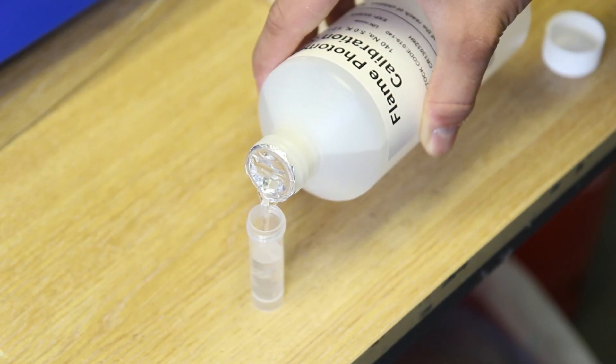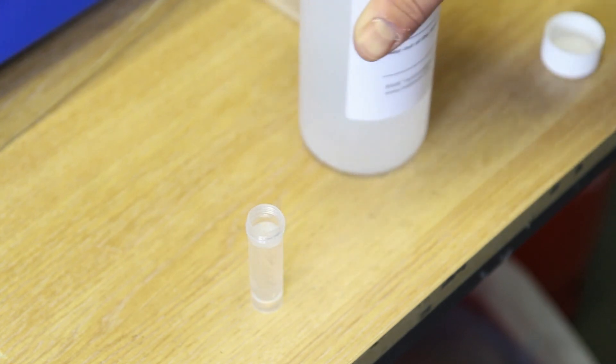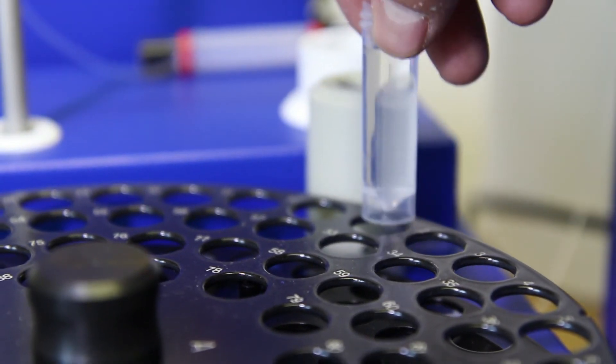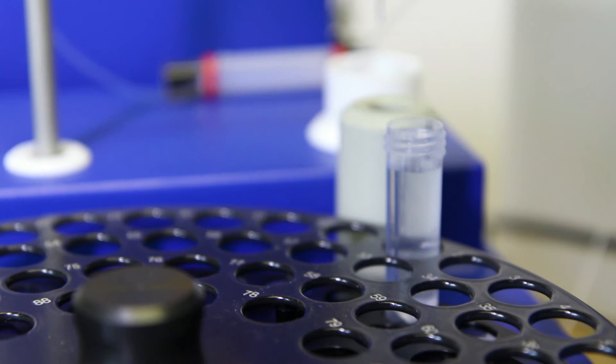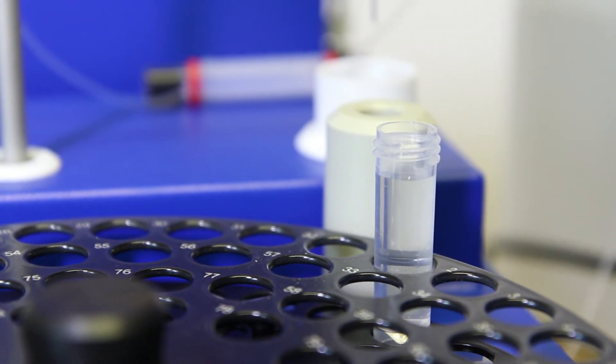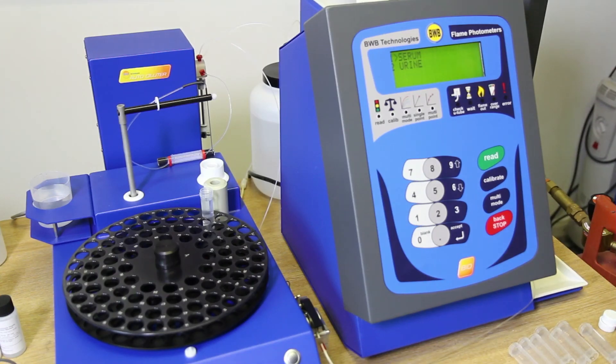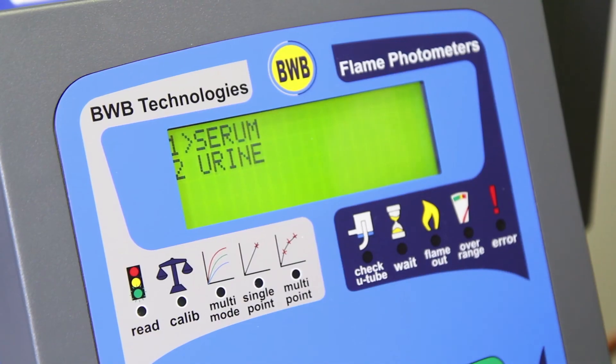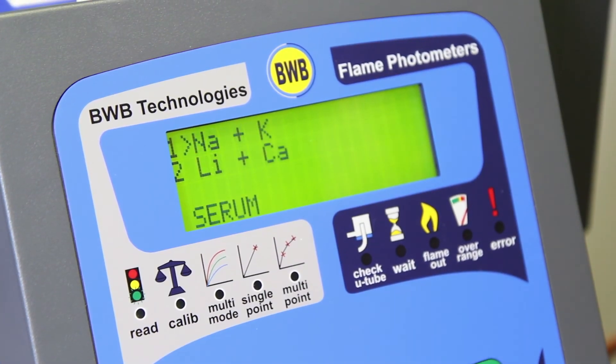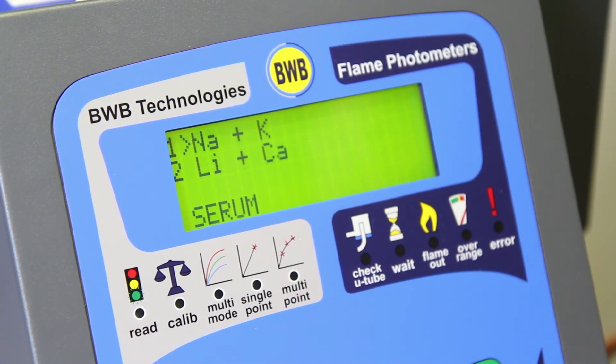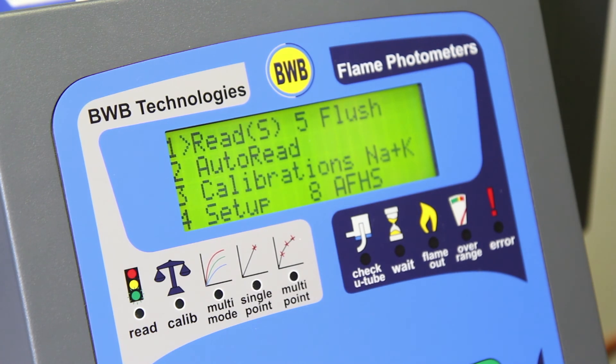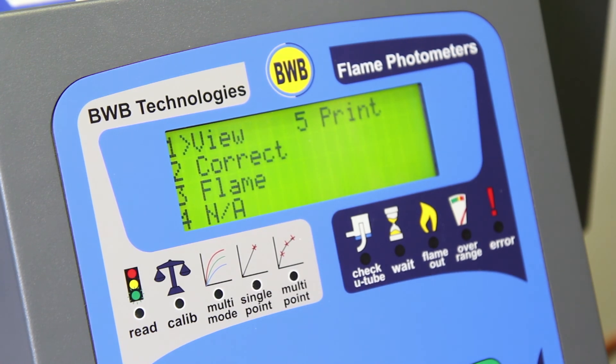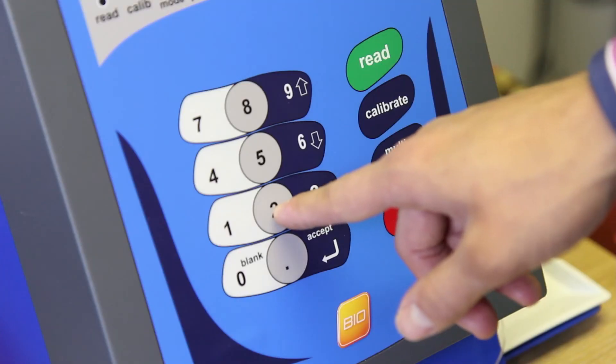First, pour the calibration solution into a vial and place in the first position of the AFHS carousel. From the BWB Bio main menu, using either the keypad or the up and down arrows, select Serum and press Accept. Now select Sodium Potassium. Select Calibrations. Select Correct. And finally select Correct Calibration.